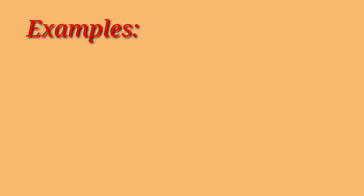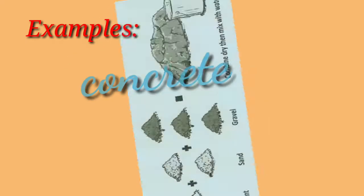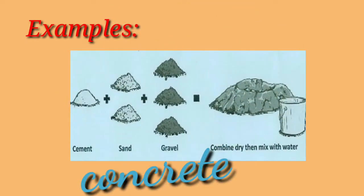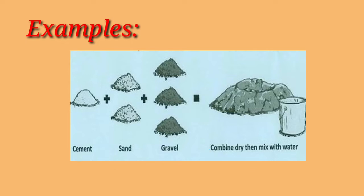Examples. Concrete is a combination of cement, sand, gravel, and water. In this example, you can still identify the different materials being combined.